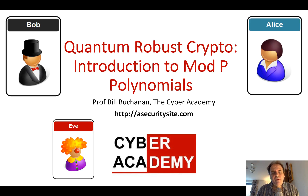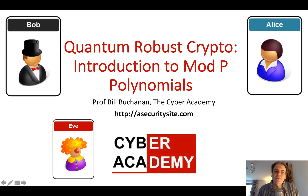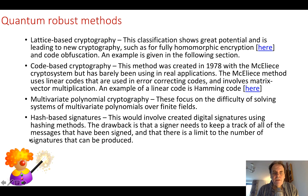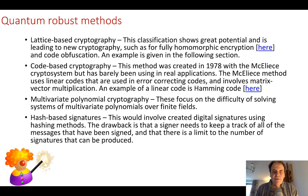Normally, public key is used where Bob wants to identify themselves to Alice. Bob will sign something with his private key and then Alice will verify it with his public key. The main methods we'll look at later on are lattice-based cryptography, code-based cryptography, multivariate polynomial cryptography — we'll cover some of the basics of that in this presentation — and hash-based signatures.